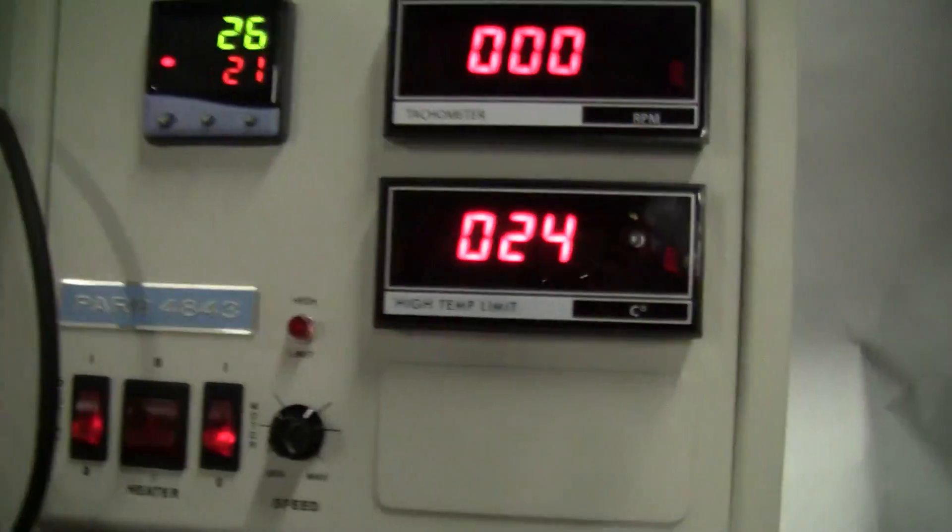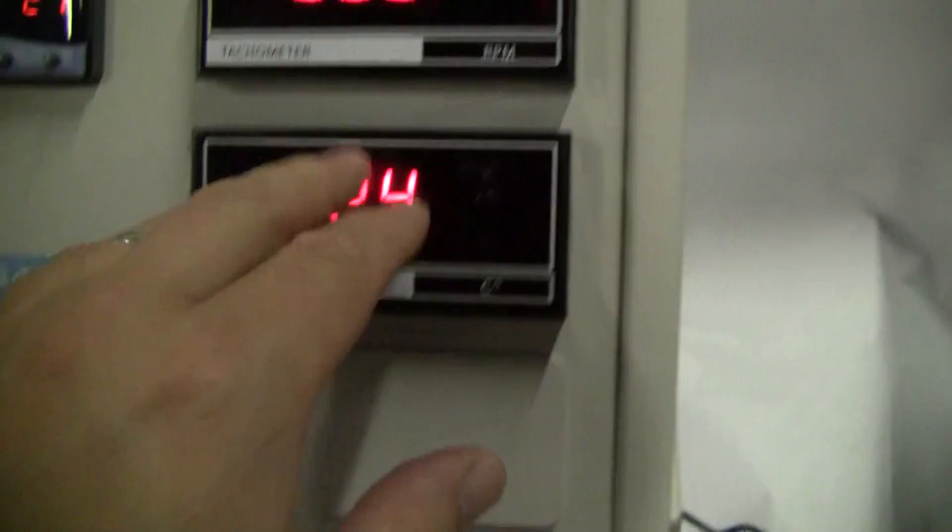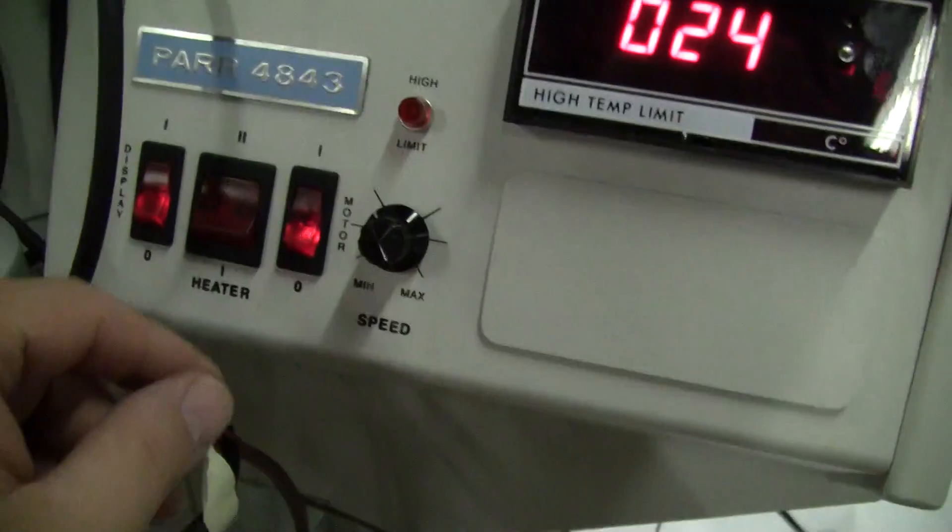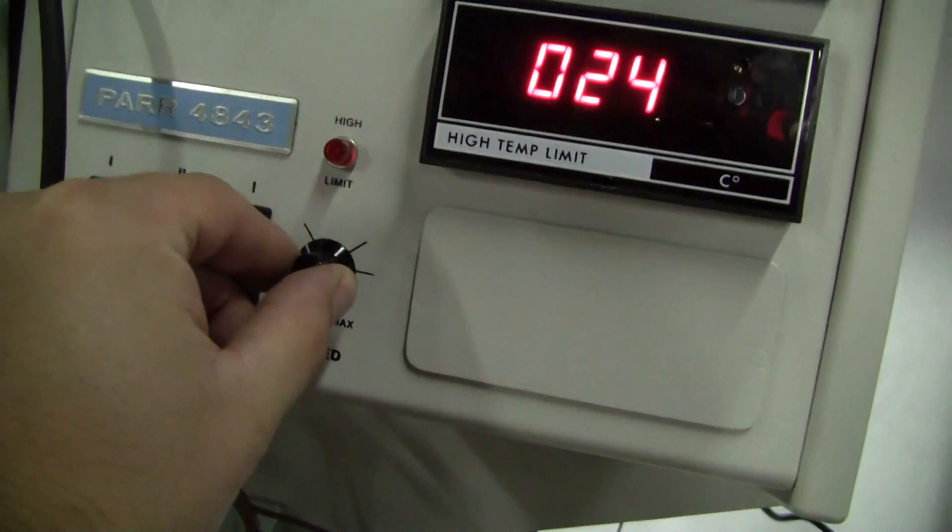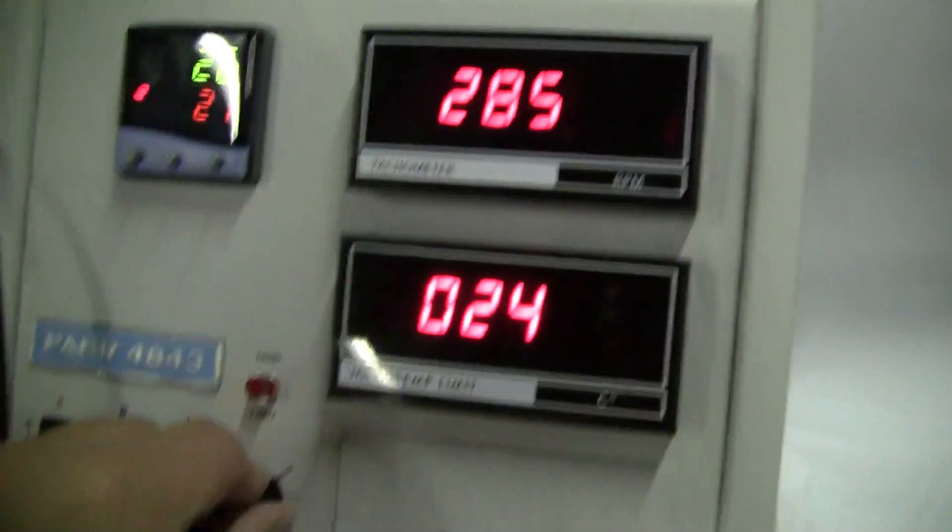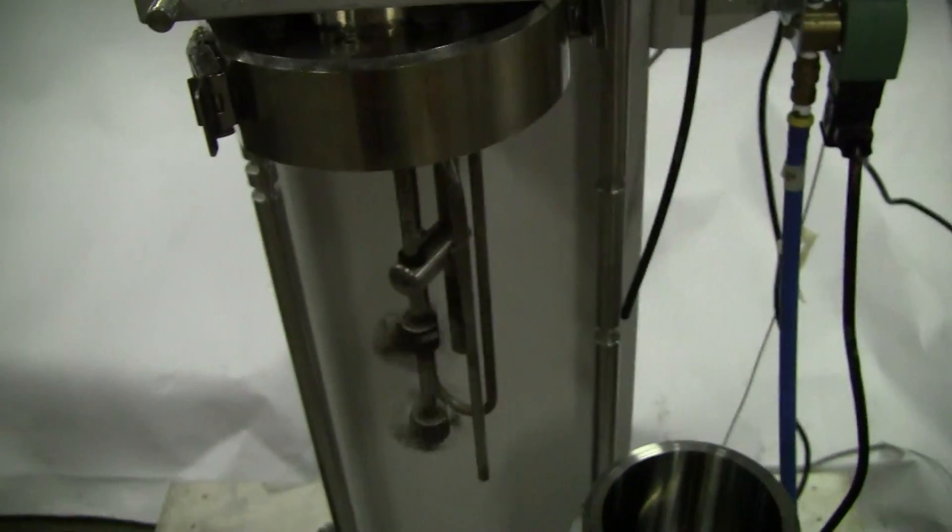On the controls, we've got a high temp limit, a tachometer, temperature set. Let's just do that. Let's actually turn the motor on. See the tachometer taking off. Blade's spinning.